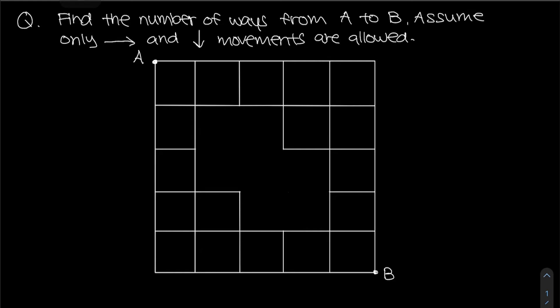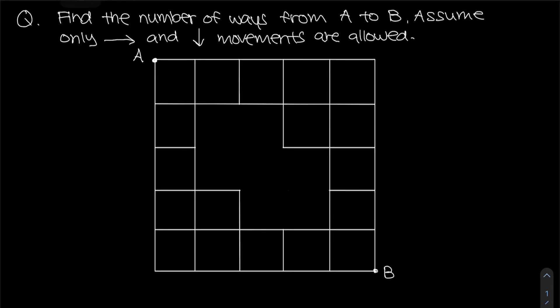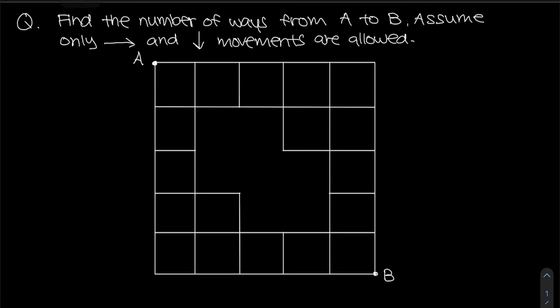So based on this figure, we need to find the number of ways from A to B, and we can only move right as well as down — we can't move left or up. We want to find the total number of ways from A to B. We can look at each and every intersection point, so I'm going to mark them out first.